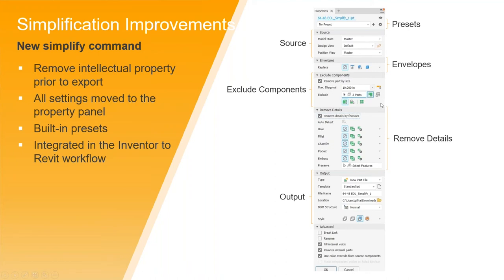There's an exclude component panel where you can either remove or include various components within your assembly for exporting. You can see there are options to remove details for holes, fillets, and chamfers — you choose to exclude or include them. And then you have an output operation: depending on what you're simplifying — whether it's an assembly or part — you specify what template you want to use and where you want to save it. In regards to an assembly environment, you can also specify what BOM structure you want.